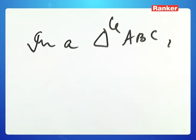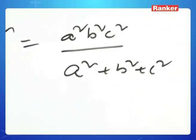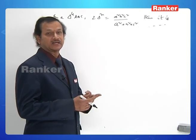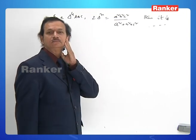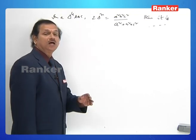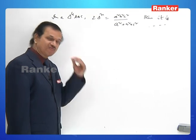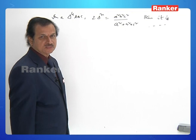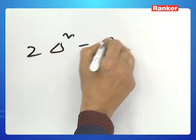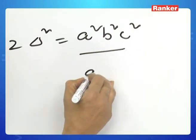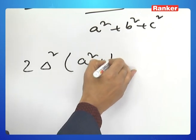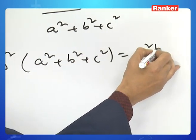The next question: in a triangle ABC, 2Δ² = a²b²c²/(a² + b² + c²). The options are equilateral, isosceles, right-angled, or none. This is a famous and familiar question in many examinations.